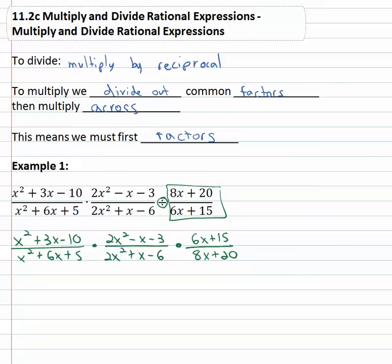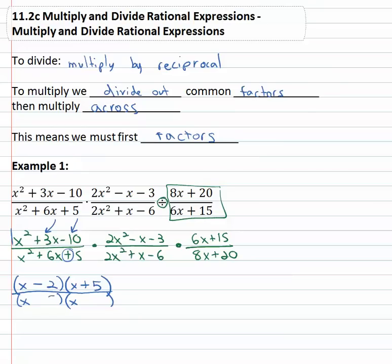Now that it's a big multiplication problem we're ready to factor so that we can try and divide out the common factors. The first numerator x squared: we know it's x times x, and we want two numbers that multiply to negative ten and add to three. Ten is two times five, and if the five is positive and the two is negative we get that positive three. Over in the denominator we want numbers that multiply to five and add to six. Five is five times one and if they're both positive that does add to six.